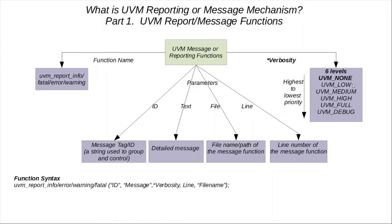Here is the basic syntax for UVM report info, error, warning, and fatal. Pretty much all of them have five parameters, as shown. Another way to use these functions is to use the macros. These macros already have file and line arguments built in. UVM error, warning, and fatal just have the ID and the message as the two string arguments required, whereas UVM info requires ID, message, and also the verbosity level.